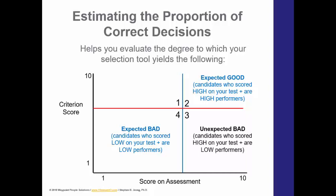Quadrant three is unexpected bad. These are employees who scored high on the test but are low performers. Unexpected good in quadrant one represents employees who scored low on your test but are high performers. Because we expect employees who score high on the test to be high performers, quadrant one would be considered unexpected.